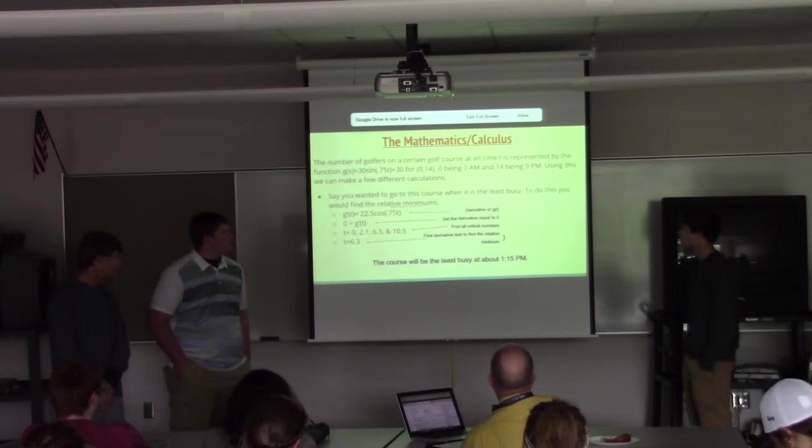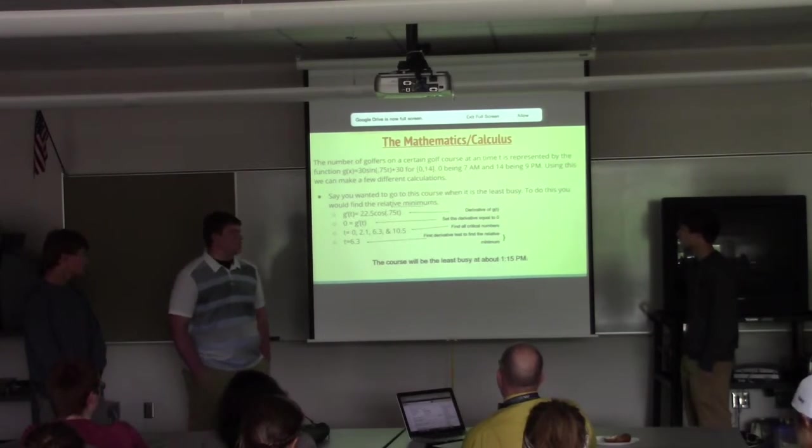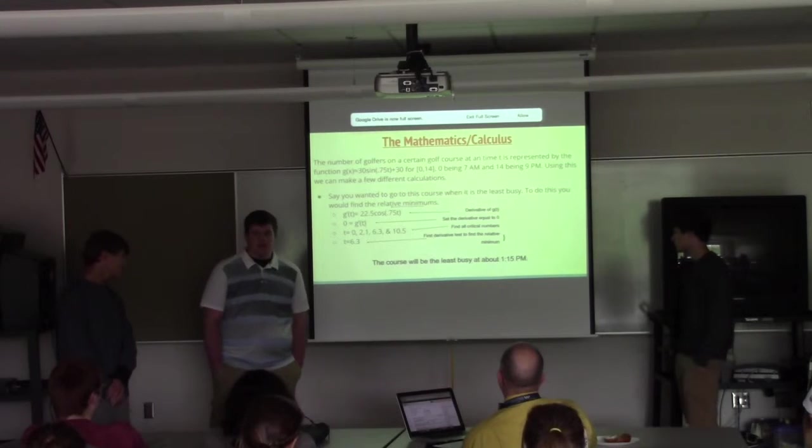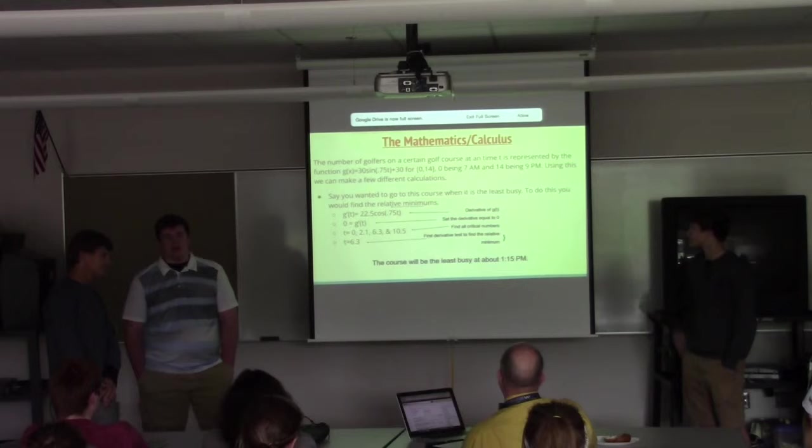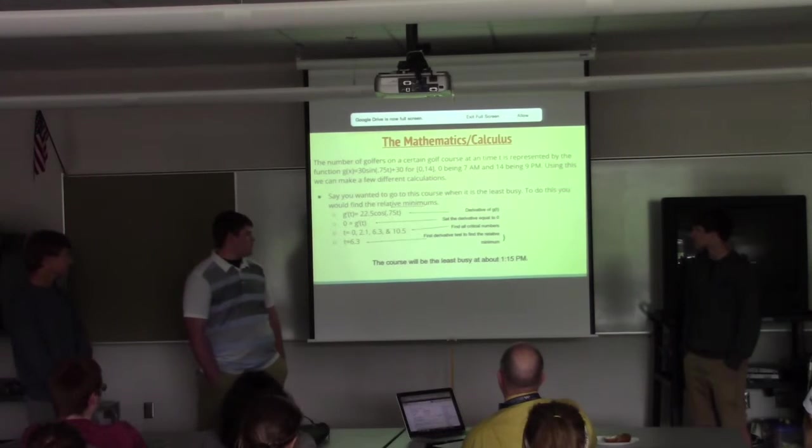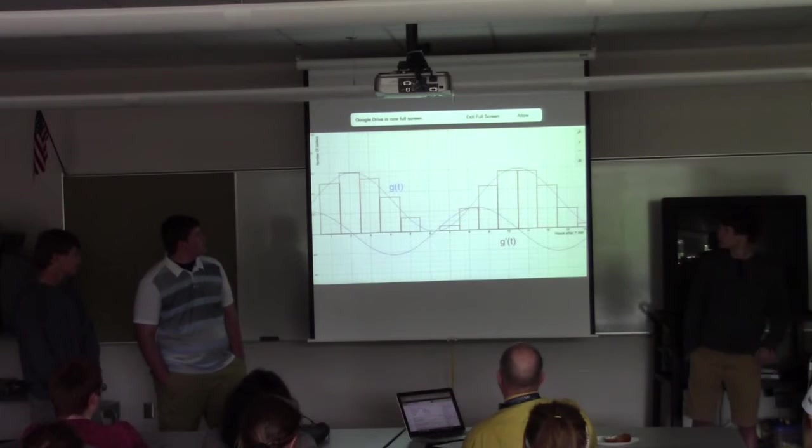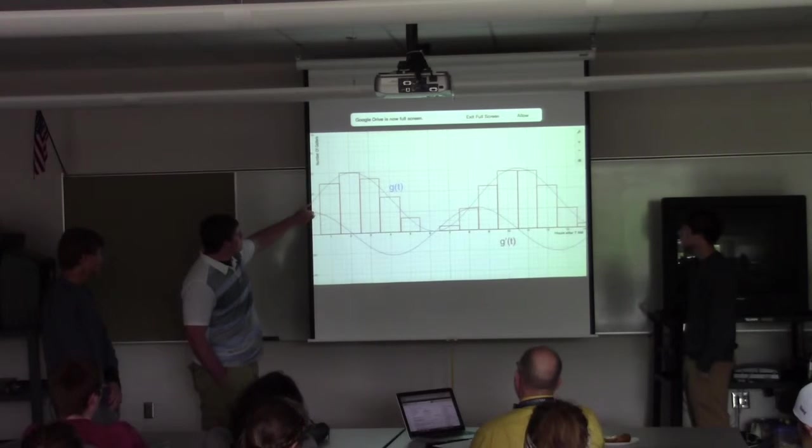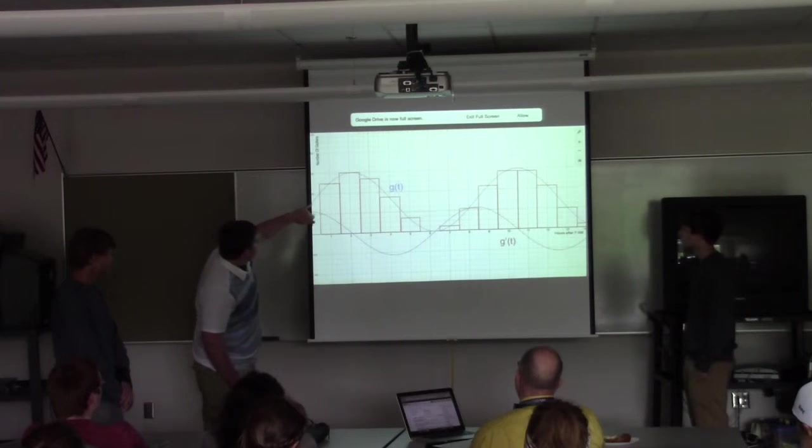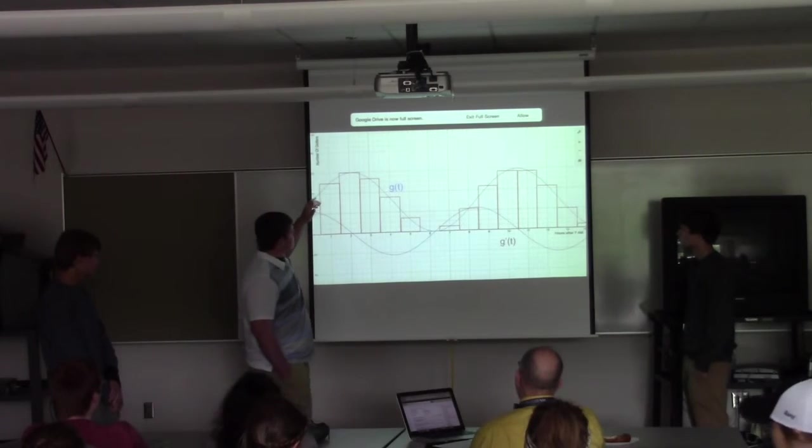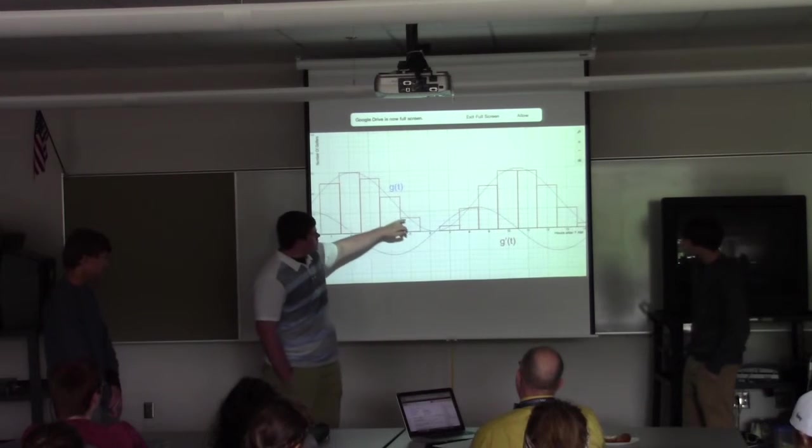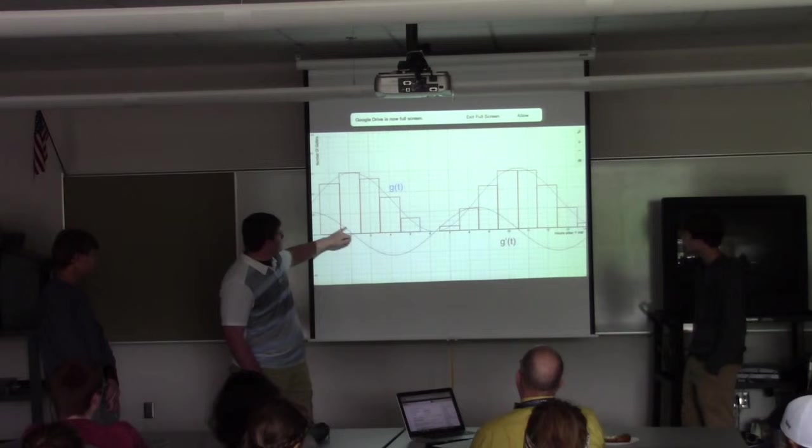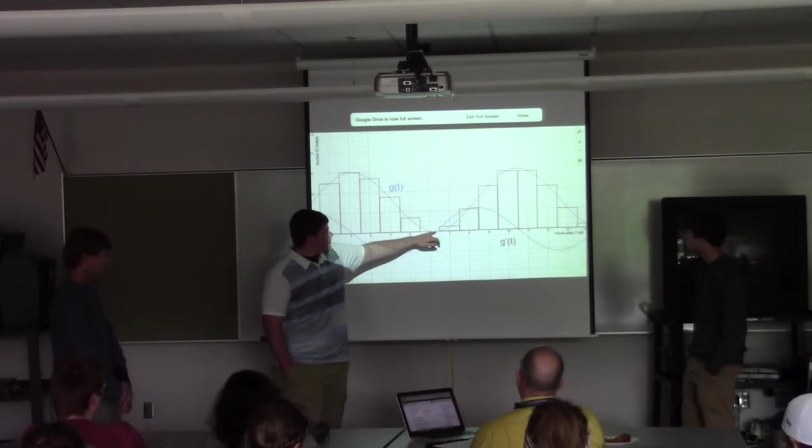The only relative minimum on that interval is 6.3, so that's when the course would be least busy. It's 6.3 hours after 7am, which is around 1:15pm. If you wanted to go to the golf course and golf when there are no other golfers on the course, it would be 1:15pm. This is a graph showing that. Up here, this is 7am, it starts out with a men's league group, there's about 30 of them that tee off right at 7am. From there it increases, and right around 1:15pm here, there are no golfers on the course. This is the derivative of that, showing that is where that critical number occurs.